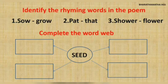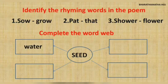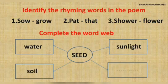Complete the word web. What is a word web? A keyword will be given and we have to write words which give more information about the keyword. Here the word is 'seed'. Let's see what are the words connected to seeds: water, sunlight, soil, and manure. All these things are needed for a seed to sprout into a plant.